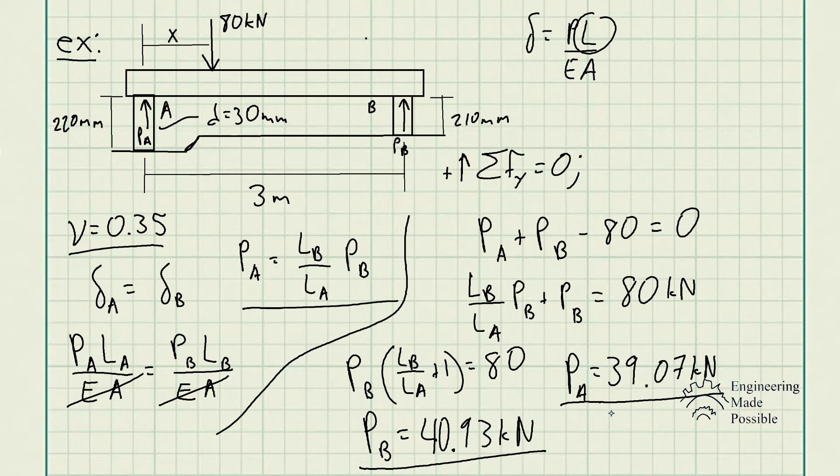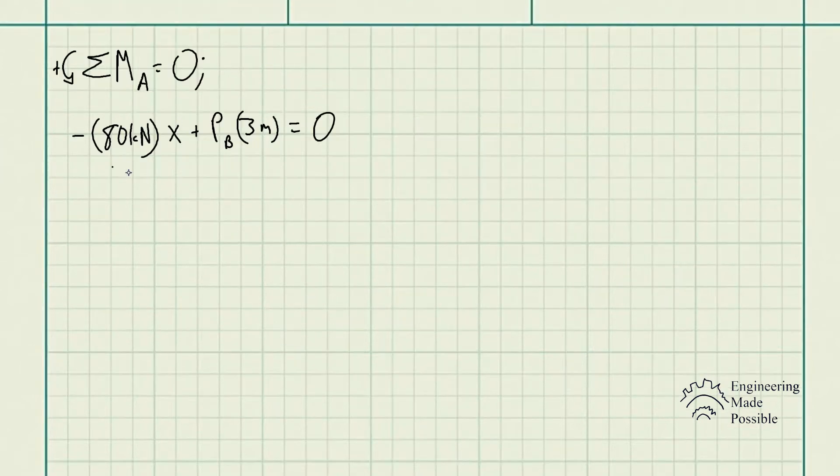So now to solve for the X here, we actually do the sum of moments. We could do with respect to A or B. I'm going to go ahead and do it with respect to A. So we get 80 kN times this variable X, and this is negative because it has a negative moment, plus P_B times the three meters, which is the perpendicular length which causes this kind of moment being equal to zero.